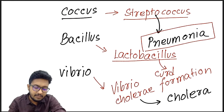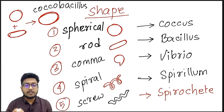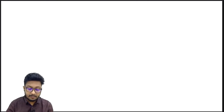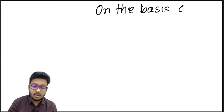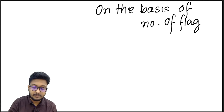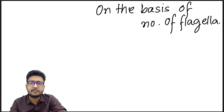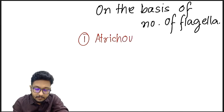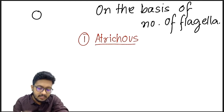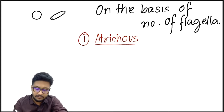The major types of bacteria based on shape are spherical, rod-shaped, comma-shaped, spiral-shaped, and screw-shaped. On the basis of number of flagella, bacteria can be divided into six major types. Atrichous bacteria have no flagella at all — whether coccus or rod-shaped, there are simply no flagella present.